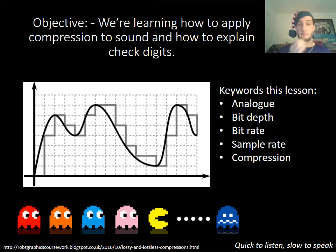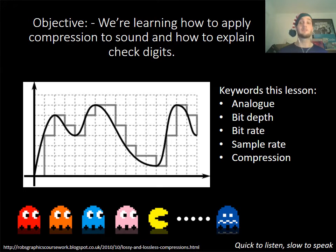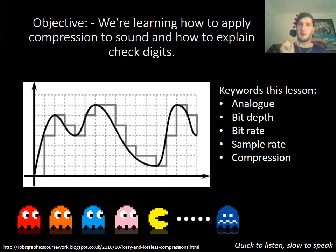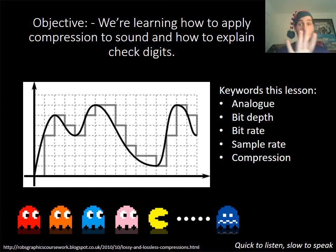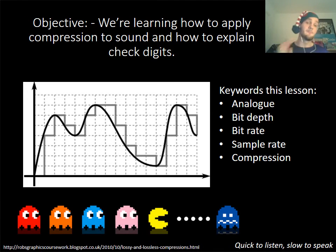Starting off, some of the keywords you'll need to be aware of are: analog, bit depth, bit rate, sample rate, and compression. They're worth noting down in your book because when you have a nine mark question, you need to show that you are technically aware of what you're talking about, and these five keywords will help you with that.